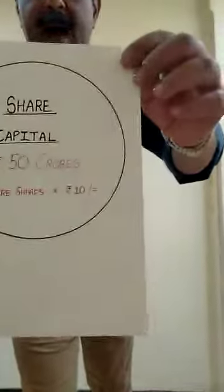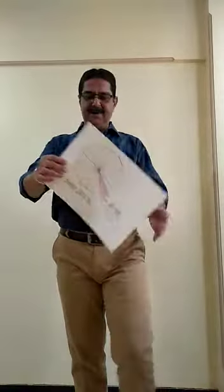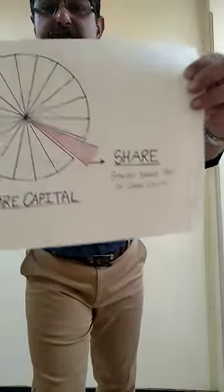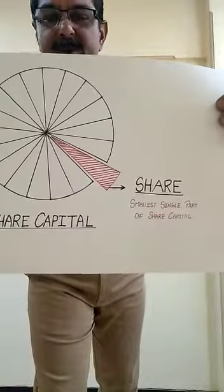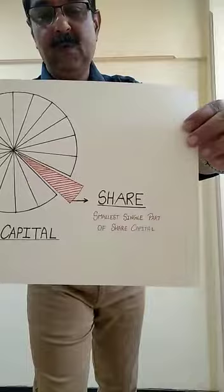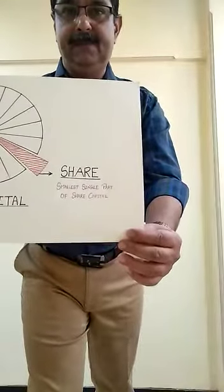For example, a company's capital may be 50 crores. For some people 50 crores may seem small, but for an average investor 50 crores is a very large amount — so it cannot be contributed by just a few people. Therefore, the company divides this share capital into small equal parts, and each of these small parts is called a share.